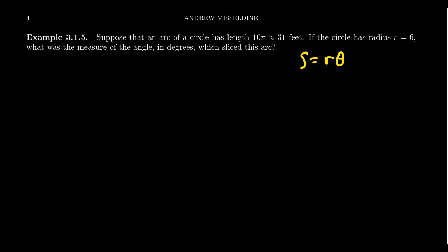Suppose that the arc of a circle has a length of approximately 31 feet. Specifically, let's say the arc is 10 times pi feet. If the circle has a radius of 6 feet, then what is the measurement of the angle in degrees? We're going to use our formula where S equals 10 pi, R equals 6.